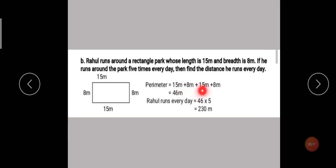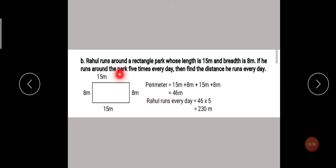Perimeter equals the addition of all 4 sides: 15 meters plus 8 meters plus 15 meters plus 8 meters. The total is 46 meters. So one round around this rectangular park is 46 meters. But the question asks: if he runs around the park 5 times every day, find the distance he runs every day. So the total distance Rahul runs every day equals 46 multiplied by 5, which gives us 230 meters.